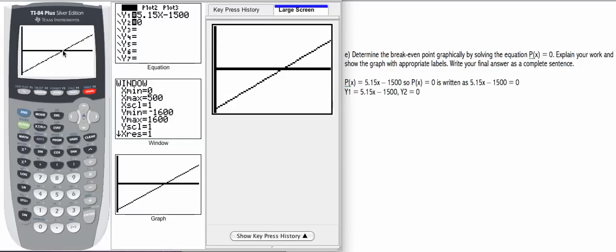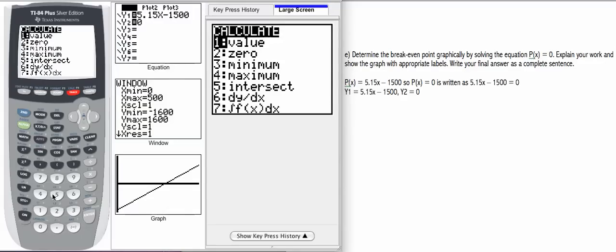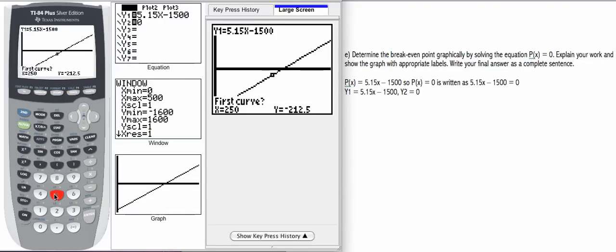Then we can see that after the break-even point at profit equals zero, then we start to actually make money. So let's see what that point is. Let's find it graphically. So we're going to go second, calc, and then number five, which was our intersect. And then we're going to hit enter three times, and we should obtain the same value that we did algebraically.